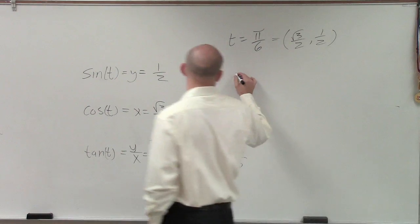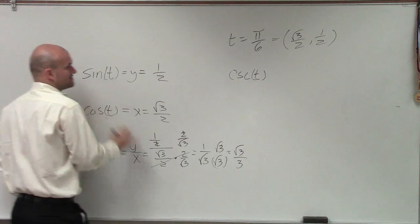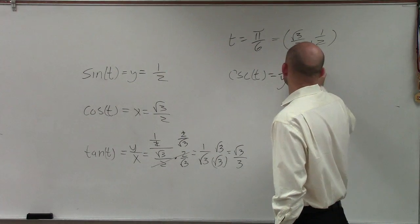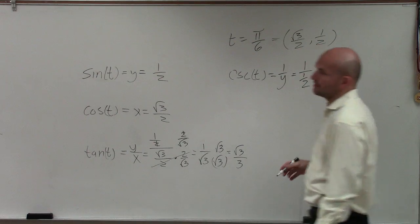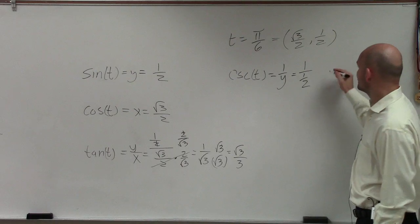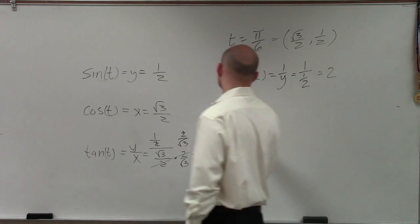Next one. Now let's do cosecant. Cosecant of t, remember, is the reciprocal of sine. So instead of being y, it's 1 over y, which equals 1 over 1 half. I can multiply by the reciprocal again, but if you guys can do this, hopefully you'll see that it's 2.